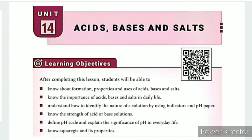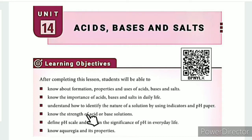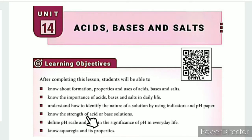In this lesson, the learning objectives are: know about formations, properties and uses of acids, bases and salts. Know the importance of acids, bases and salts in daily life. Understand how to identify the nature of a solution by using indicators and pH paper. Know the strength of acid or base solutions.